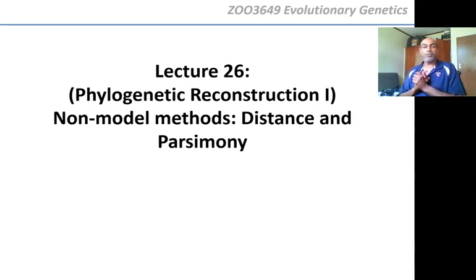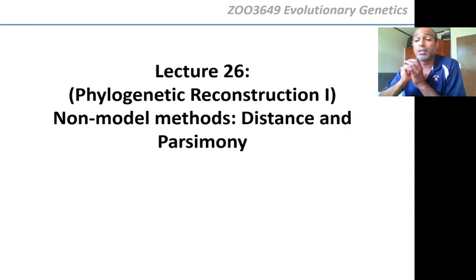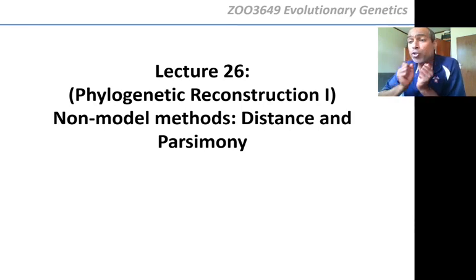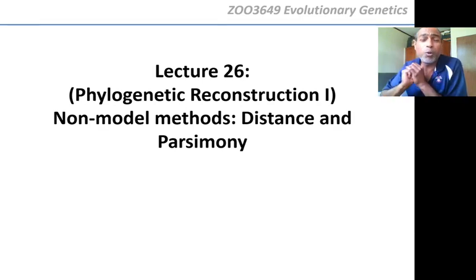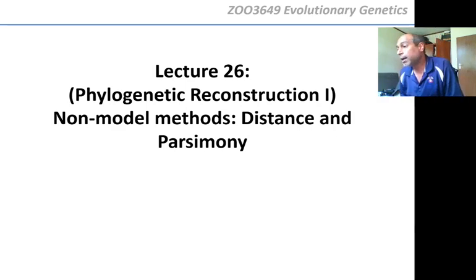I'd like to leave it there. In the next lecture we're going to be talking about how to actually construct trees. I just want to say that you will be examined on this in both tests and in your exam — how to build phylogenetic trees is a crucial part of ZOO3649. You cannot expect to go through the whole module without knowing how to answer questions in tests and exams about how to make trees. These sections are extremely important for you to pass this module. I'll leave it there and I will see you for the next lecture.